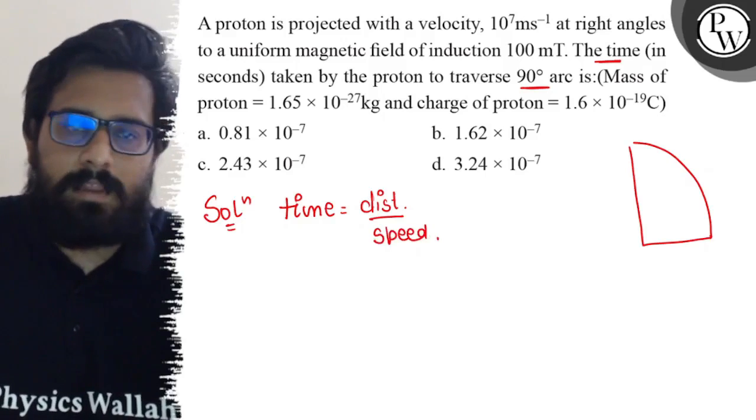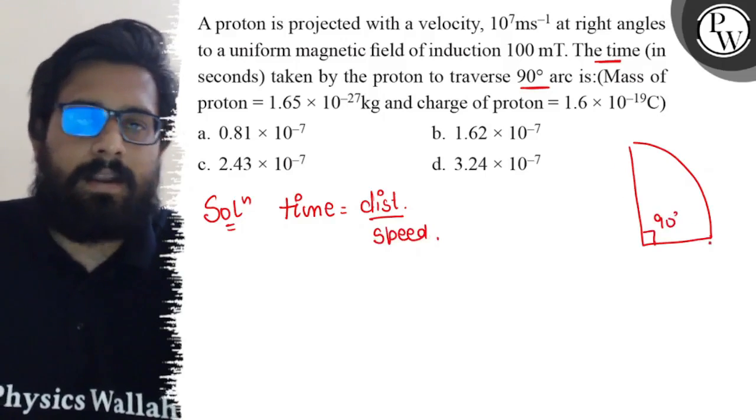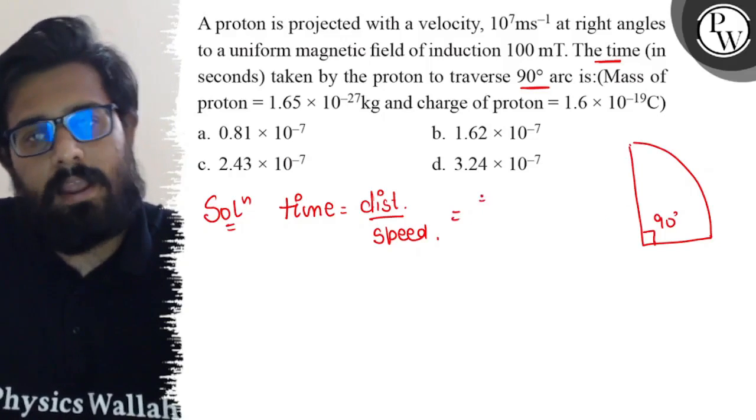So the time can be written as distance upon speed. Now you have a 90 degree arc to travel, so the distance covered will be 2πr divided by 4, and speed is v.